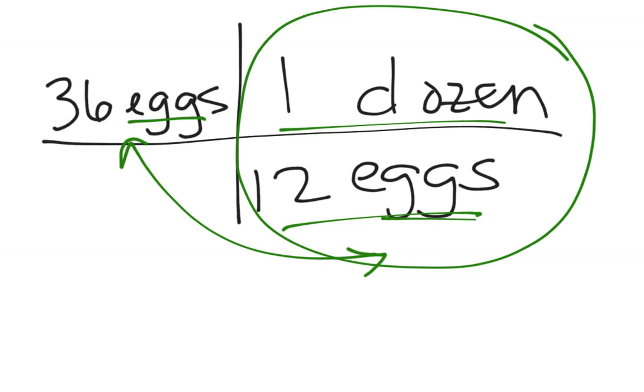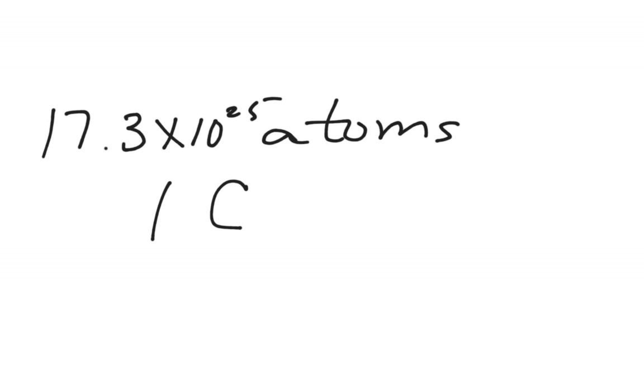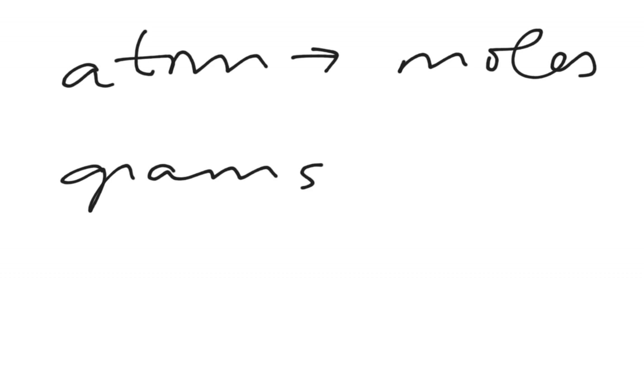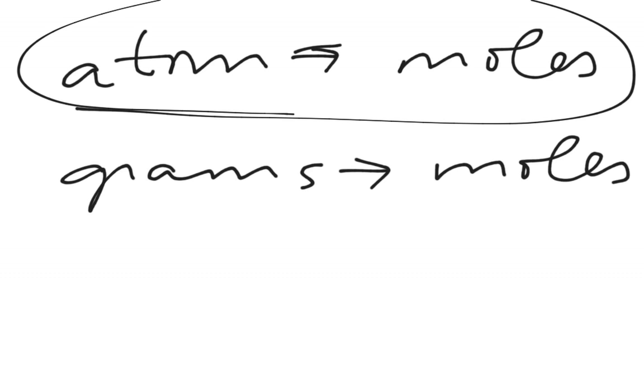So when we set up a problem, if I say that I have 17.3 times 10 to the 25th atoms of acetic acid, then when I set up my table, I can go back and say, okay, well, I know that I can convert between atoms and moles, and I can convert between grams and moles. So I'm going to be looking at these things that equal each other.